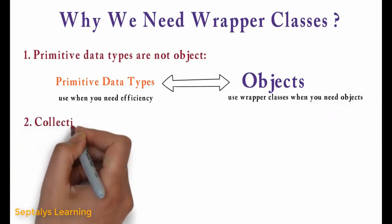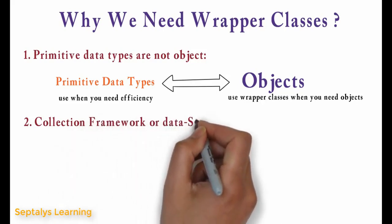Second reason is the collection framework or data structures in Java work only with objects.